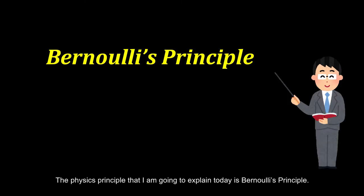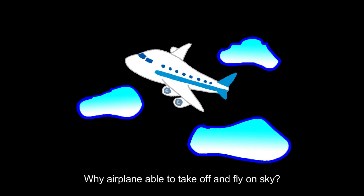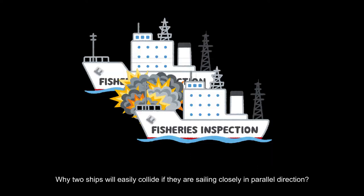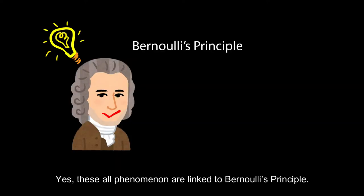The basic principle that I'm going to explain today is the Bernoulli Principle. Do you ever think about why an airplane is able to take off and fly in the sky? Why two ships easily collide if they are sailing closely in a parallel direction? How do F1 racing cars optimise aerodynamics to gain grip and prevent overturn? Yes, these all phenomena are linked to the Bernoulli Principle.